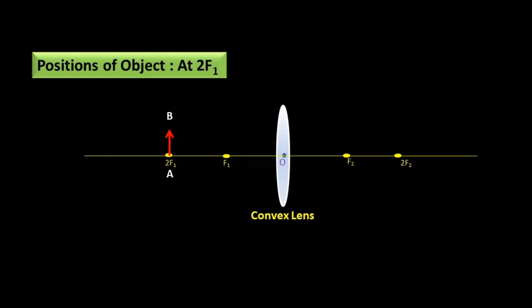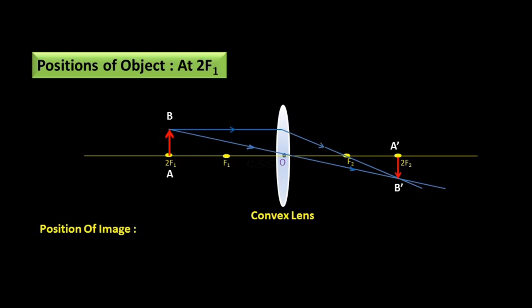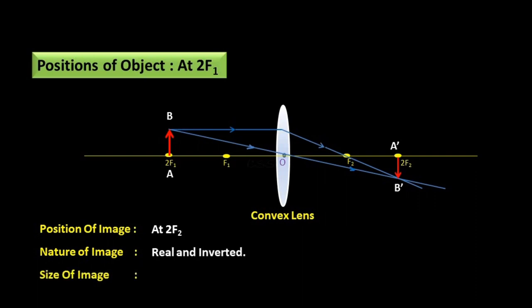Another position — object at 2F1. AB is the object on 2F1. The incident ray coming from the object is parallel to the principal axis and passes through focus F2. Another incident ray coming from object AB passes through the optical center without any deviation. These two refracted rays cross each other at a single point — this is the position of image A'B'. Position of image: on 2F2. Nature of image: real and inverted. Size of image: same size as that of object.